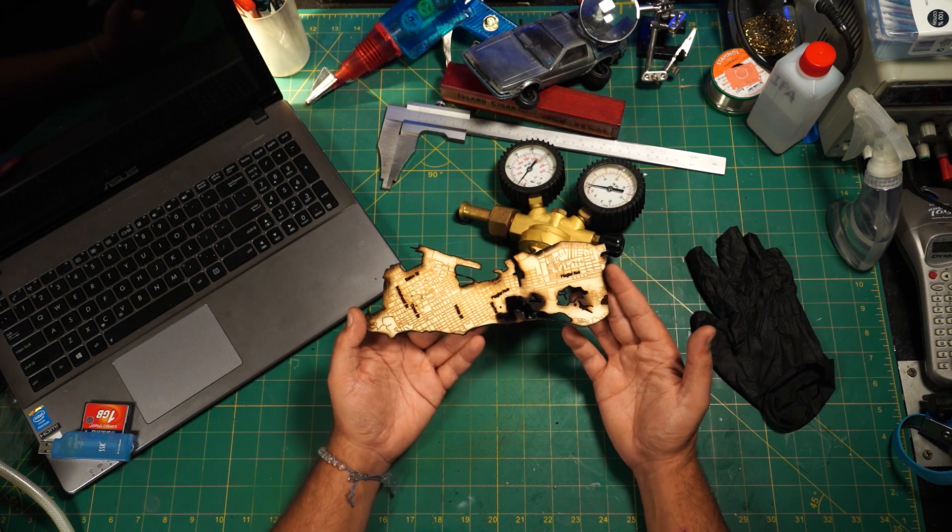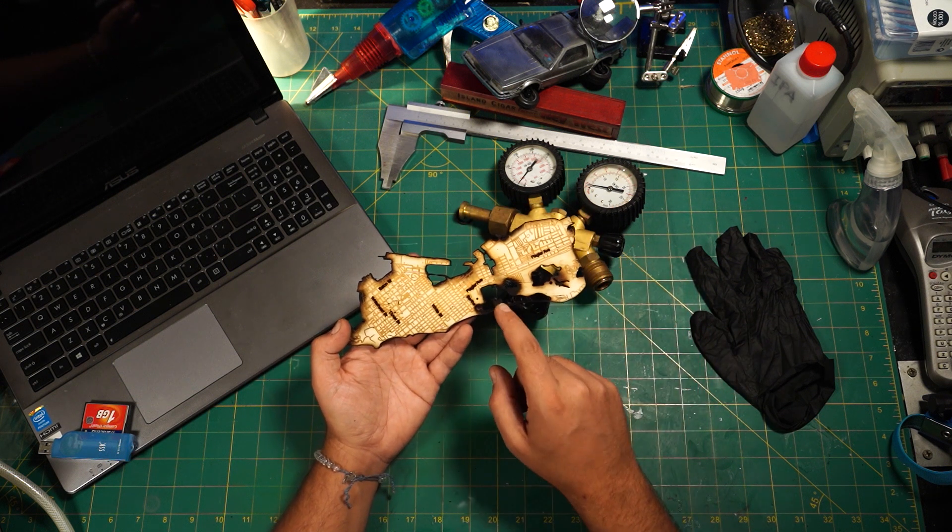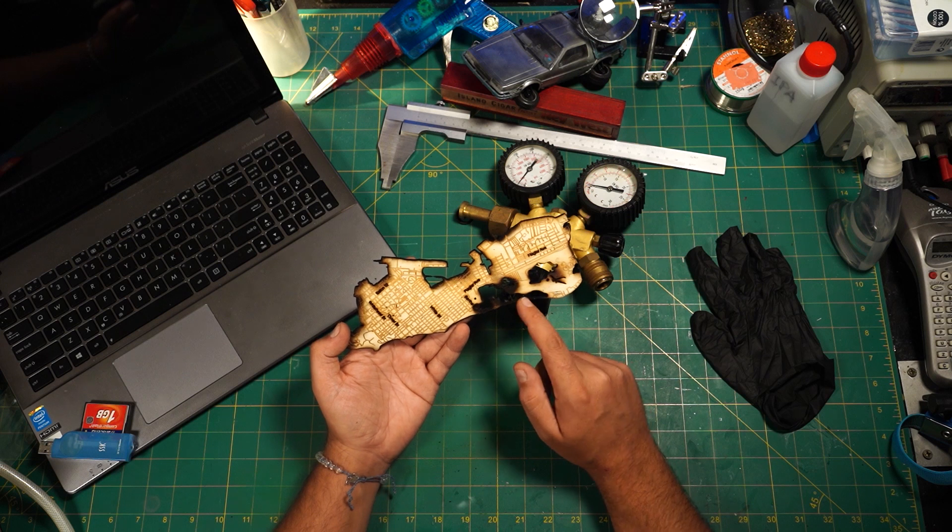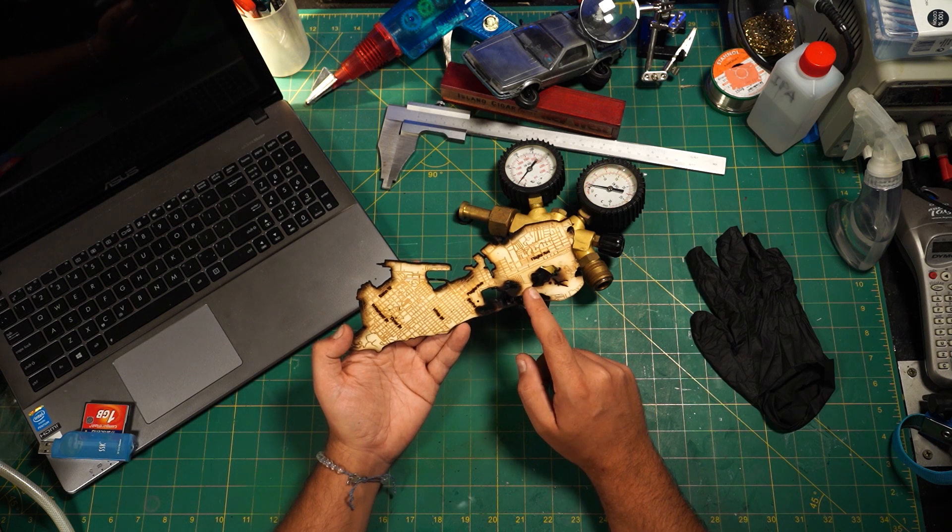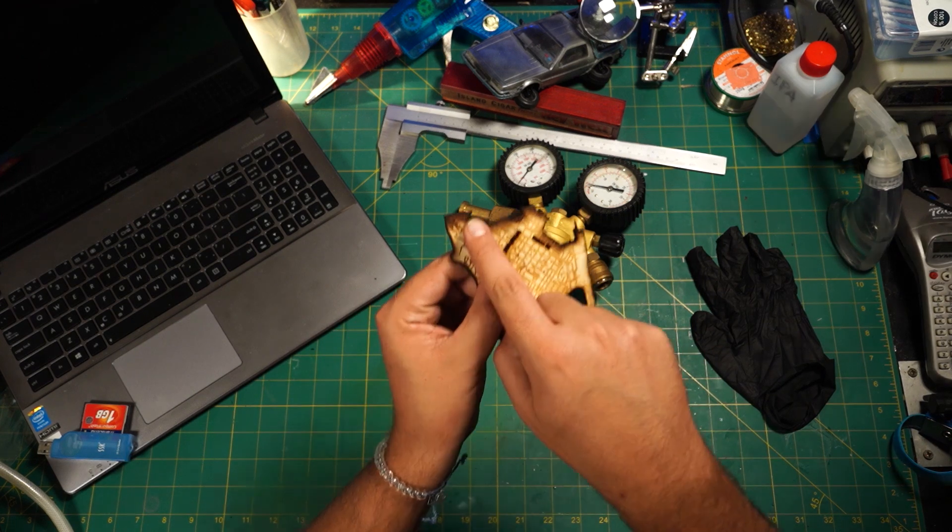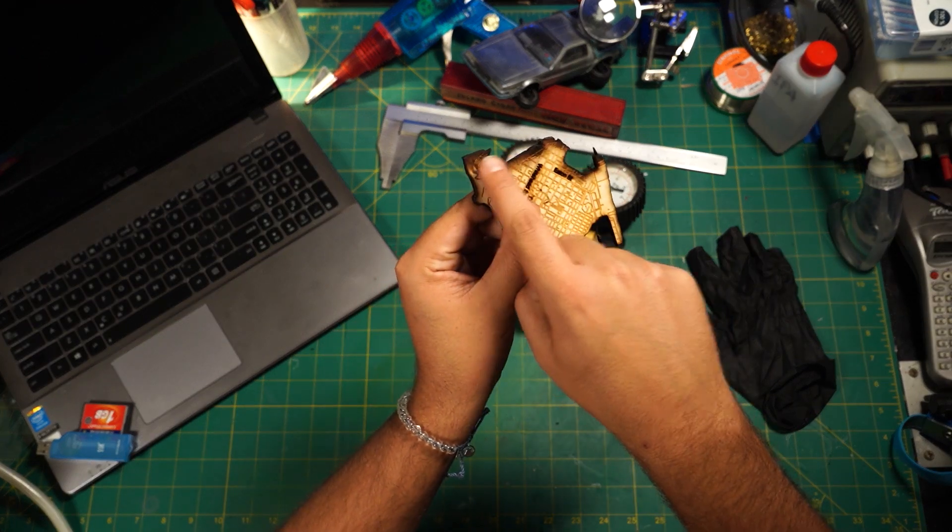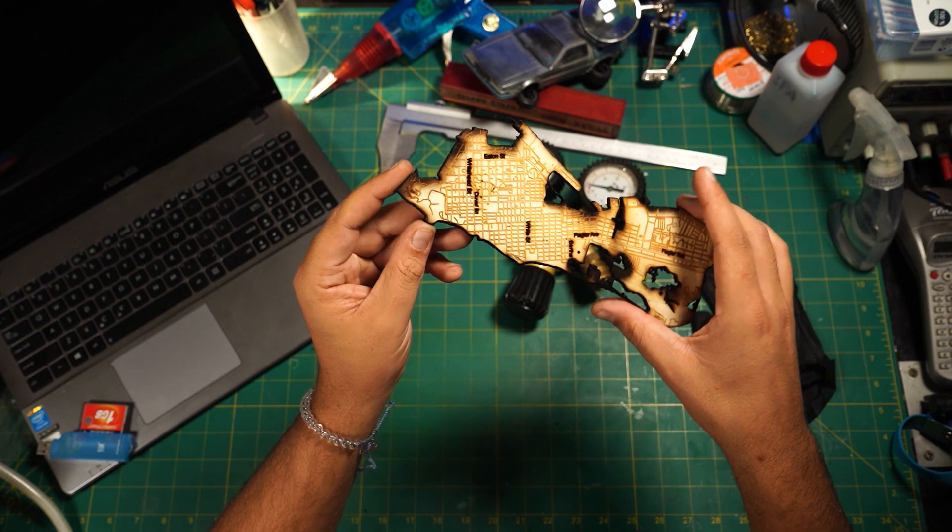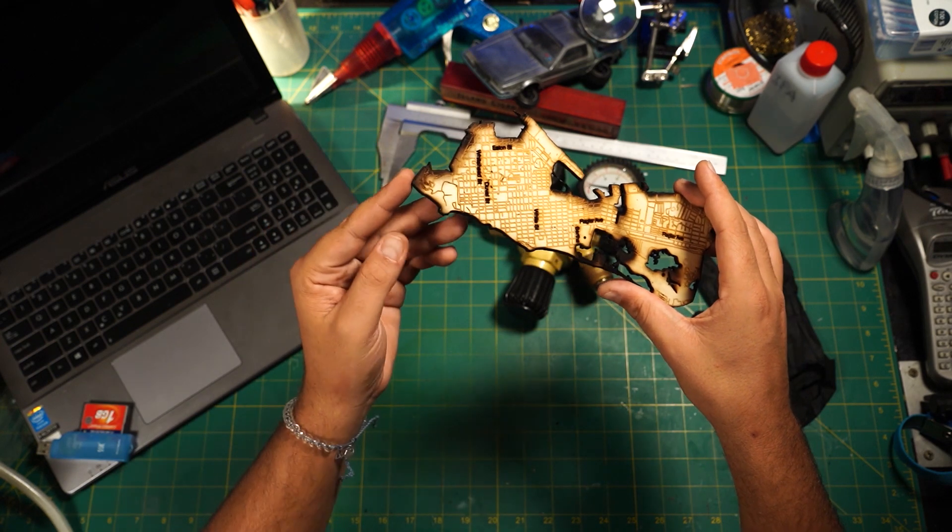However the second pass causes another problem, as the laser hits the already carbonized surface, which is way harder to penetrate, and when the cutting lines are closely together, as you can see here where a whole piece is missing, the risk of burning the wood to ashes and creating embers is quite high.